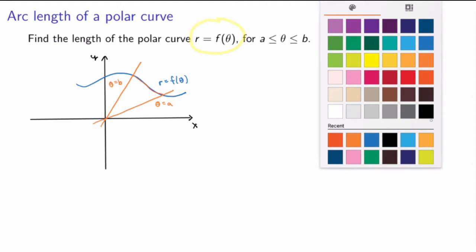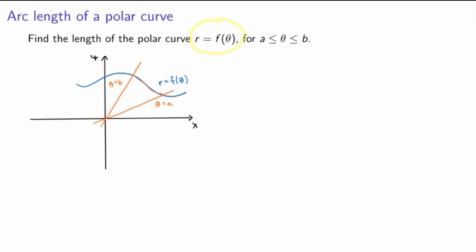How can we do that? The idea — just as we did before when we calculated the slope of tangent lines — is to consider the curve as being a parametric curve in Cartesian coordinates. Remember that x equals r·cosθ and y equals r·sinθ. If you think of r as a function of theta, this defines a parametric curve where theta is the parameter. With this in mind, we can calculate the length using what we derived for parametric curves.